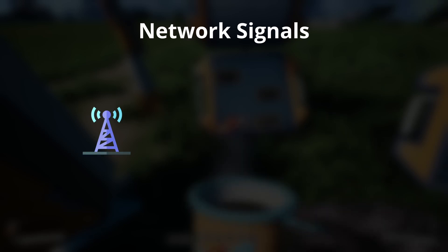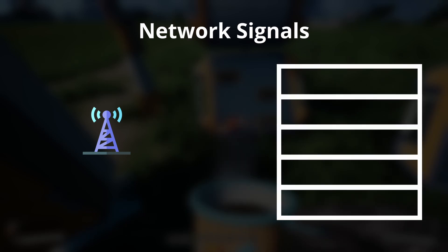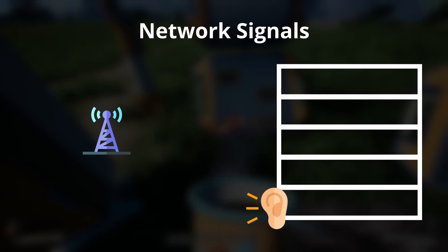Now you may wonder how we can get the button to actually work. Right now when we press the button, nothing happens. For this we have to rely on network signals. Network signals are a system that allows components — or anything in the game you can address with a computer — to emit so-called network signals. When such a thing emits a network signal, it adds an entry in the signal queue of all the listening computers.